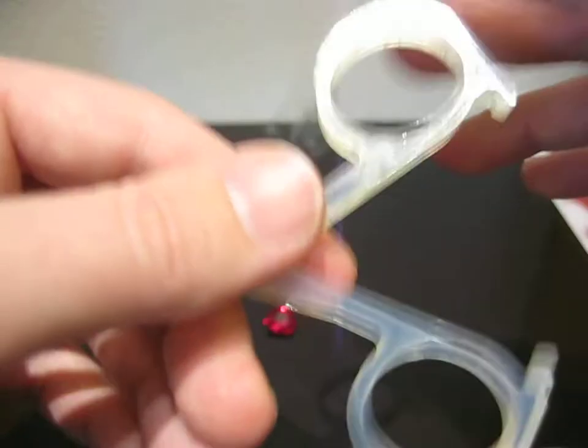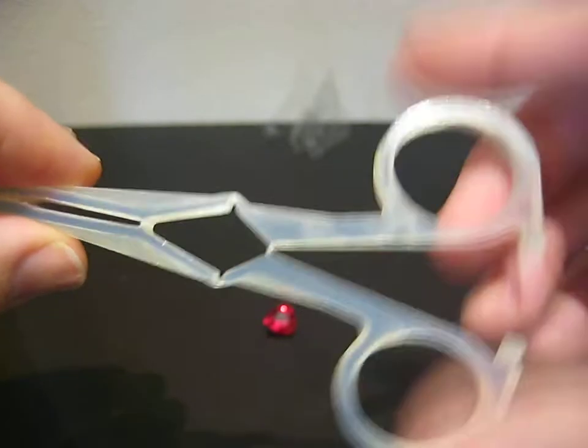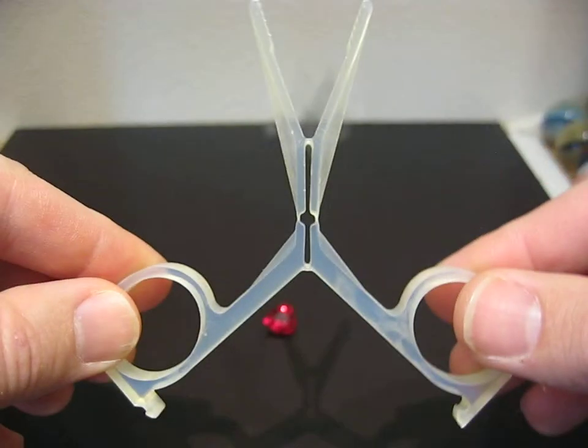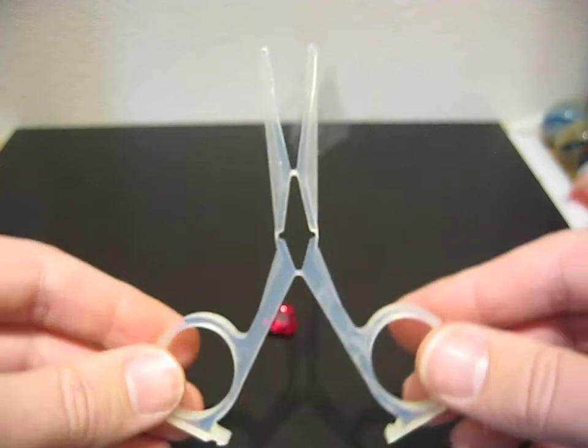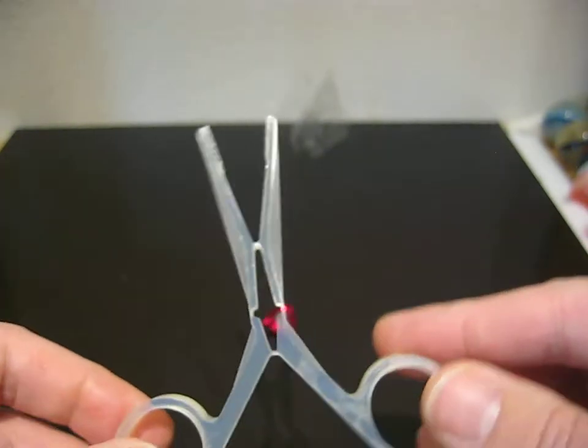When that's torn out, it frees the forceps to operate. When these parts come together, the jaws close.